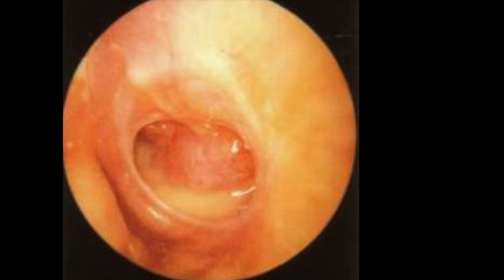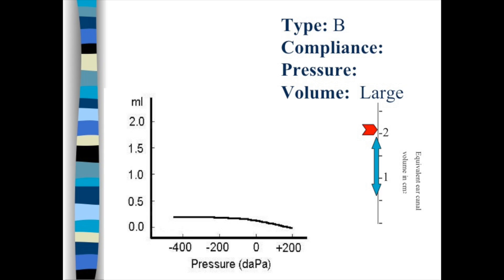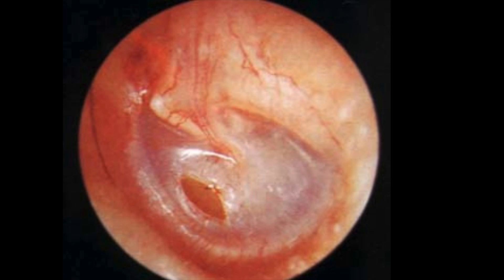Let's look at some new ears. Here we see a chronic perforation. You would expect a flat Type B tympanogram with high canal volumes. Here's another ear showing a small perforation, likely secondary to a recent tympanostomy.